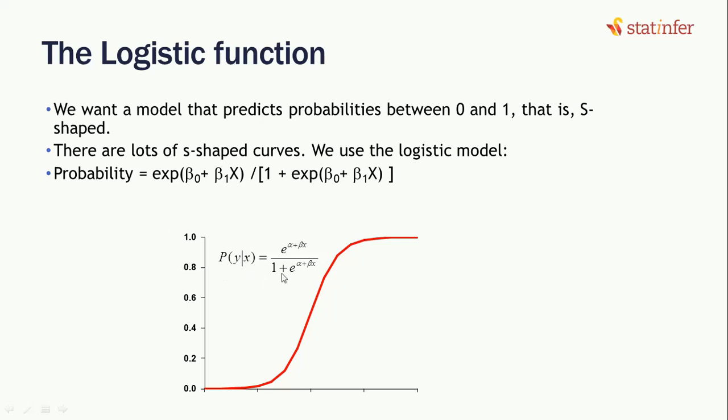So we have converted it like this: exponential of beta 0 plus beta 1 x1 divided by 1 plus exponential of beta 0 plus beta 1 x1. Using this mathematical formulation, we would be able to utilize even the linear regression fitting into a logistic function.